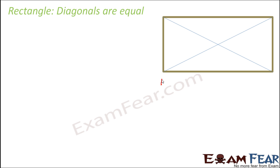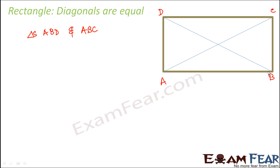We have considered a rectangle ABCD. The diagonals are AC and BD. Now let us consider two triangles: triangle ABD and triangle ABC. In these two triangles, angle A equals angle B because both are equal to 90 degrees.